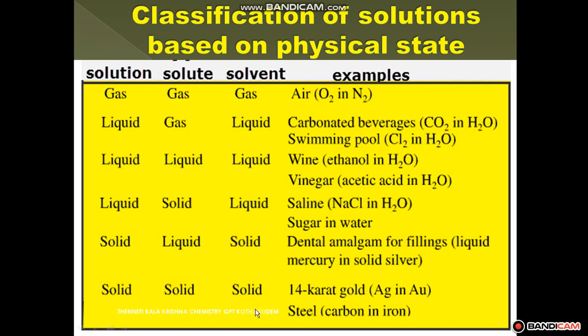An example for liquid in solid solution: dental amalgam used for filling. It contains liquid mercury and solid metals such as zinc. Mercury is always present in liquid state at room temperature, while the remaining metals are in solid state. When mercury mixes with another metal, they form an alloy where one component is liquid and one is solid — an example for liquid in solid solution.